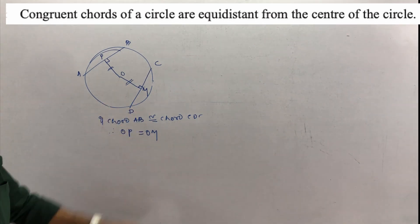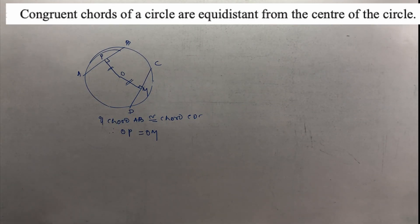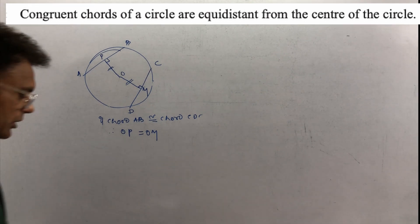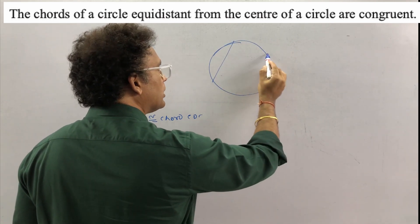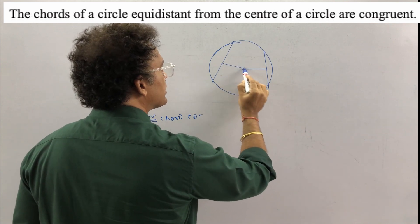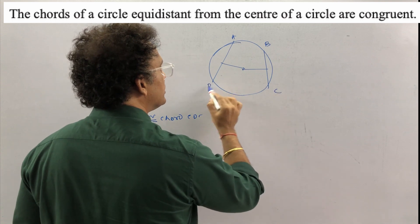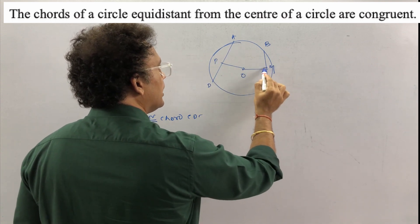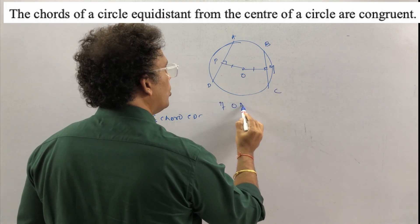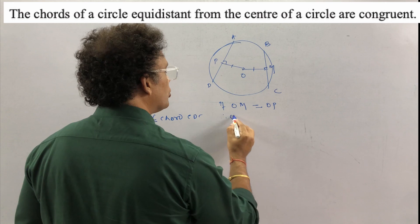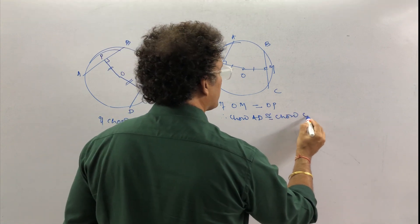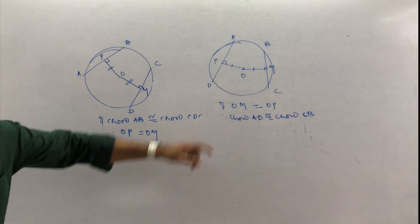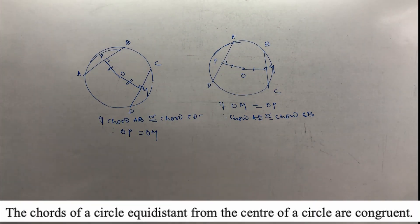Now the converse: the chords which are equidistant from the center. With the same diagram — points A, B, C, D, O, P, M — if this distance and this distance are the same, that is if OM is equal to OP, then chord AD is congruent to chord CB. This is your property: the chords of a circle equidistant from the center of the circle are congruent.